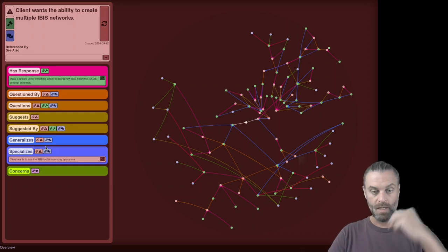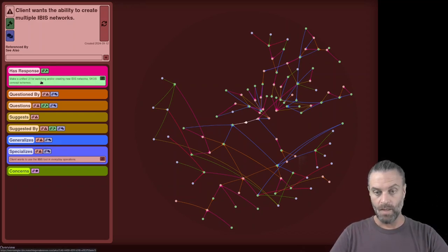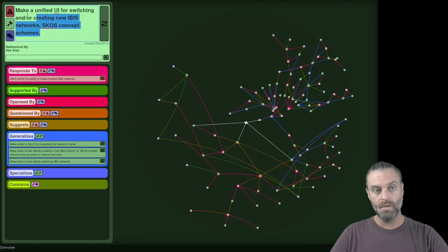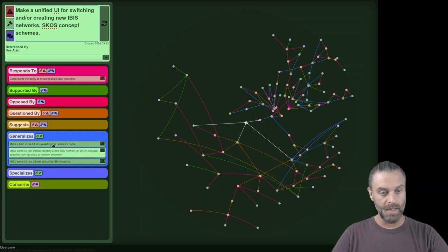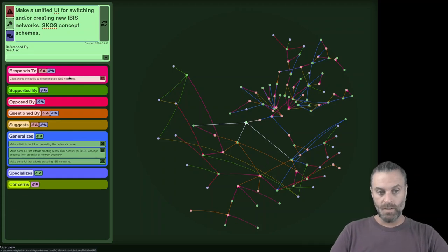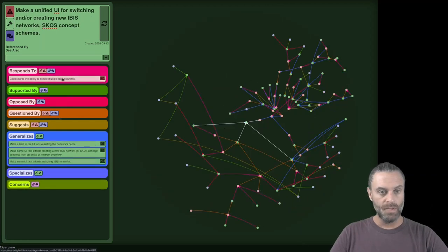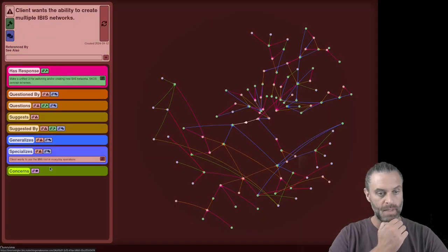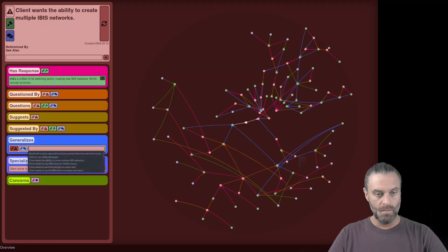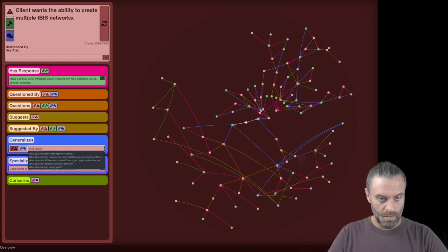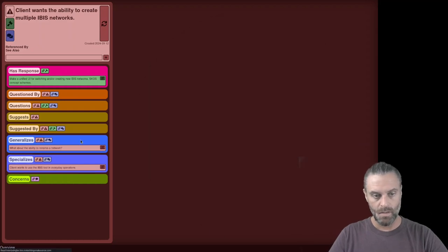So I can drill down. When I drill down into this, you can see, for instance, that here is a response to the issue. And again, this is a marching order. This is something that you can translate into an actionable thing. And it furthermore goes and it responds to this particular issue about creating multiple IBIS networks, which I'm in the process of doing. And it has these subsidiary elements as well. And each one of these are in response to these other things. This generalizes, or rather this should be generalizing. What about the ability to rename the network? So that should actually go there.